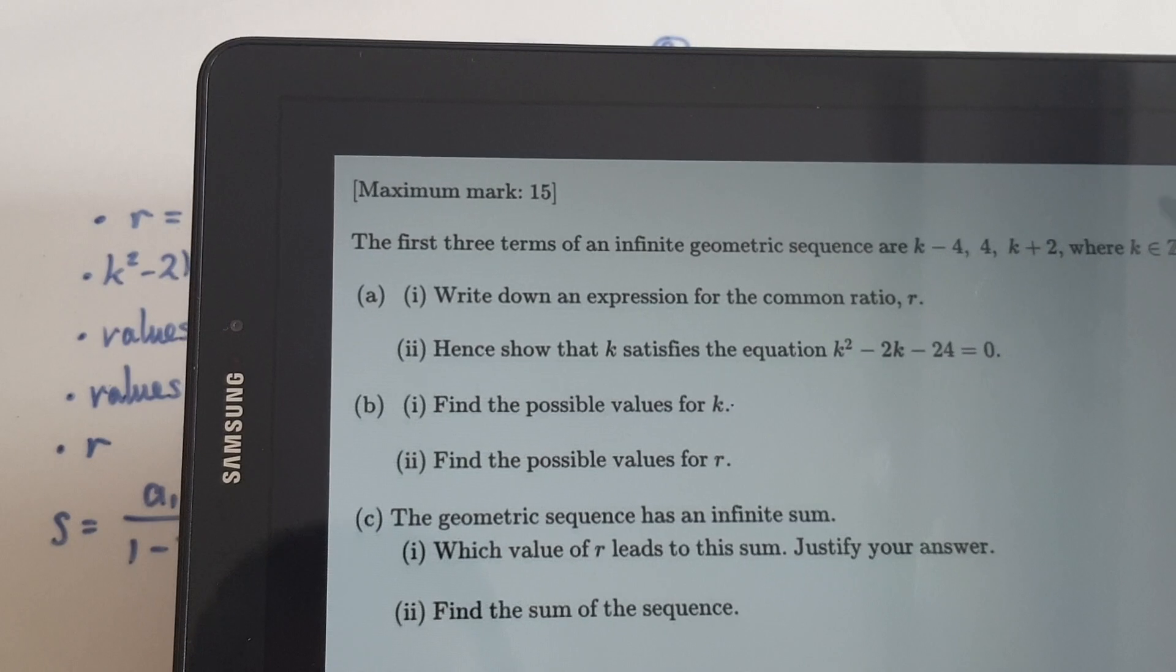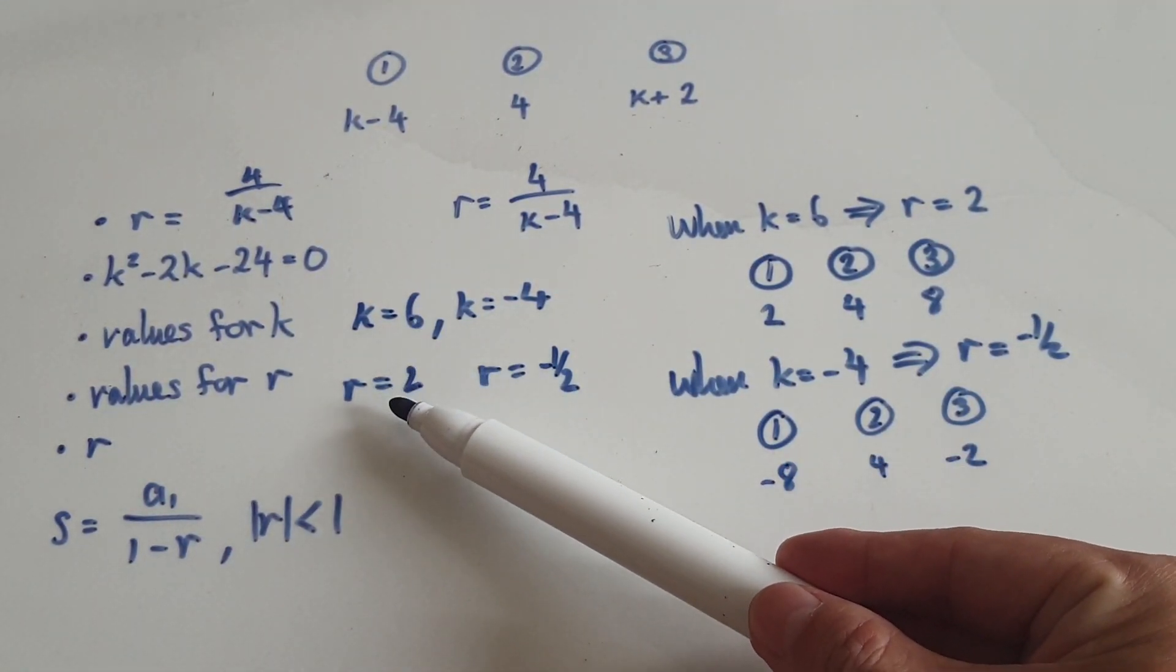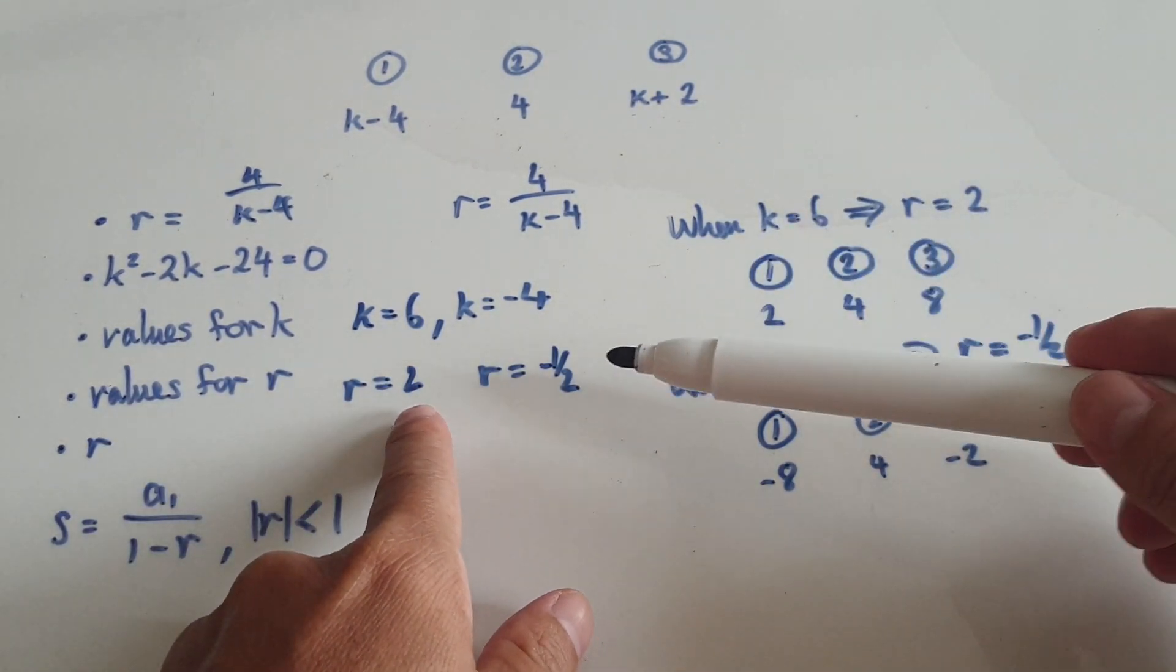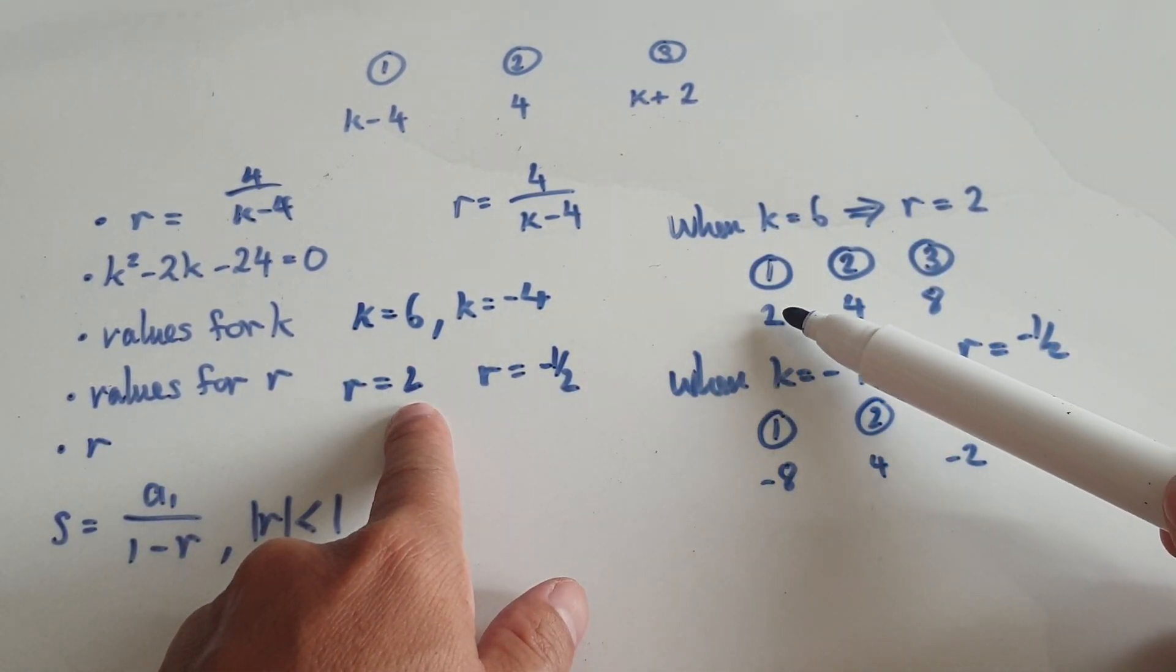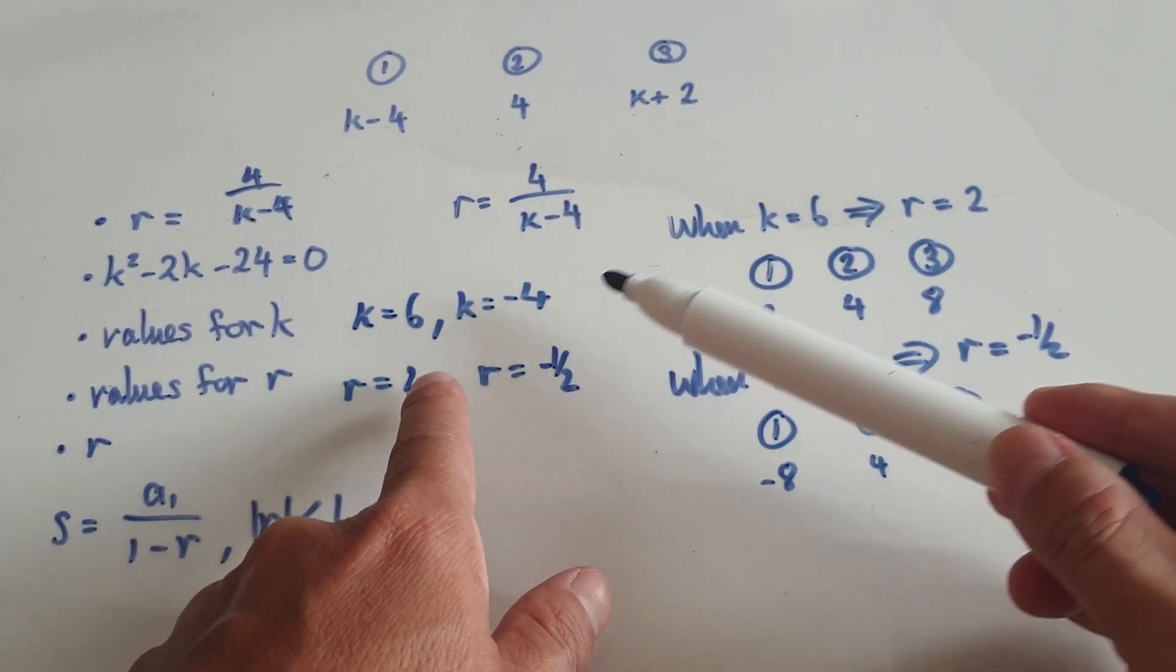Following on from the previous video, we were trying to answer this question and we got to this stage here where when k is 6 the common ratio would be 2. So when k is 6, common ratio is 2. That means your first term is 2, you times 2 and then you times 2.